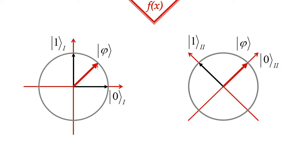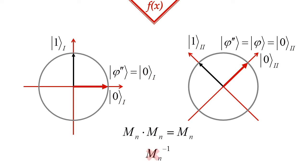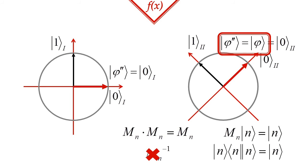One consequence of the measurement being a projection is that measuring a system introduces an irreversible change, at least in cases where the state really is changing. This is because projection matrices are not invertible, unless they are the identity matrix. The only situation in which the state is not changing is when the state is the very basis vector corresponding to the outcome of the measurement. In this case, the state vector is an eigenvector of the matrix.